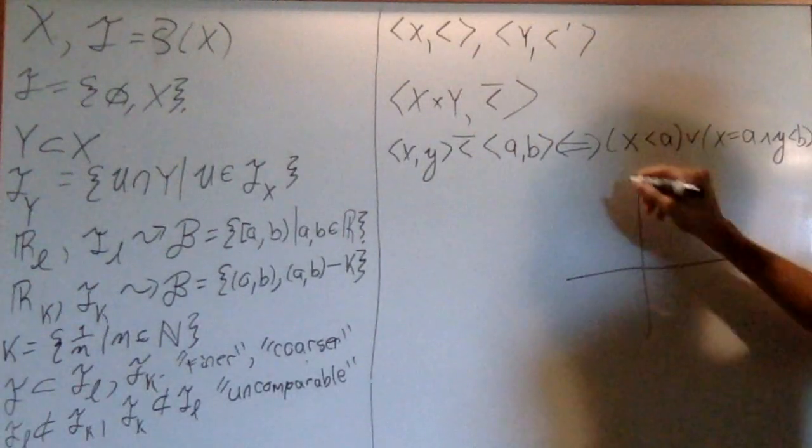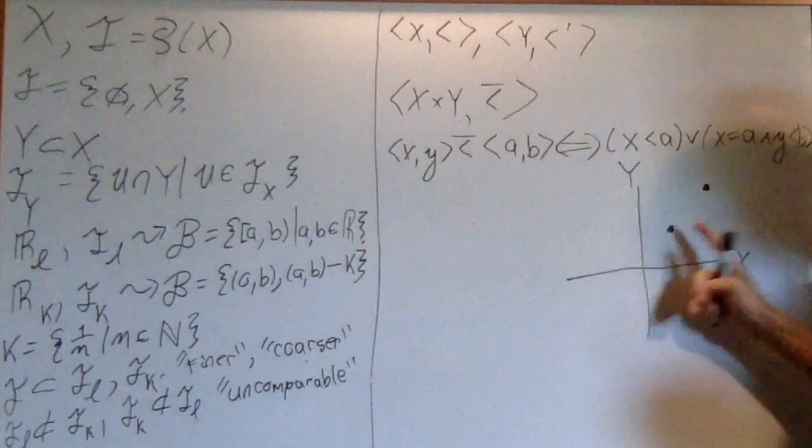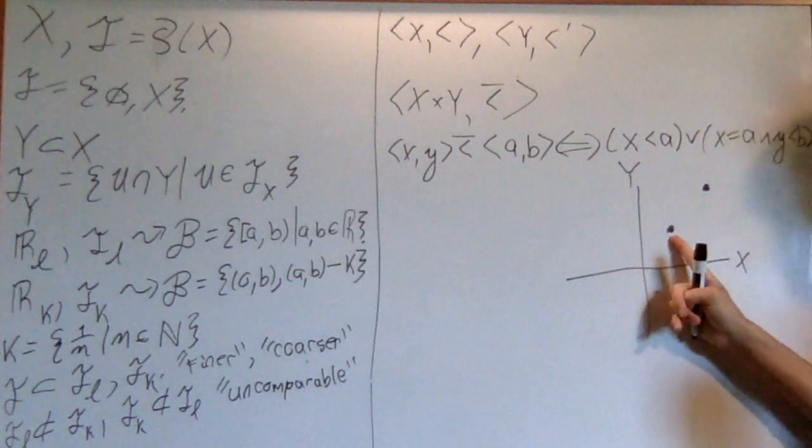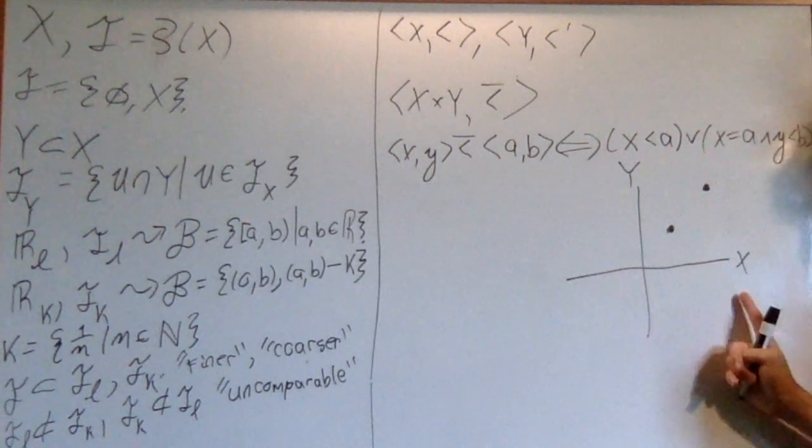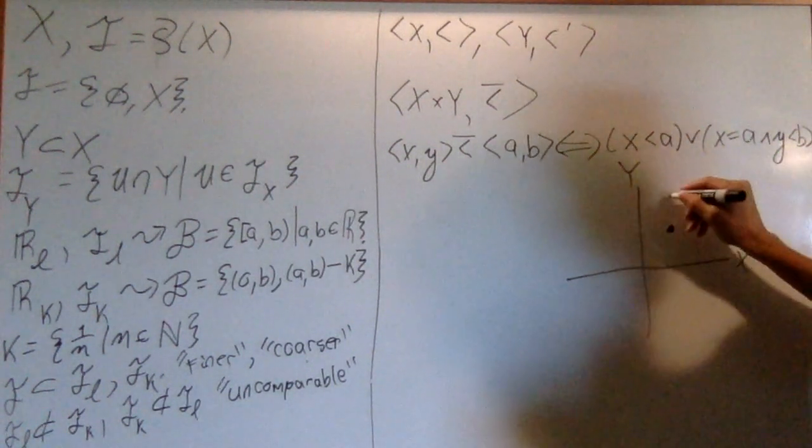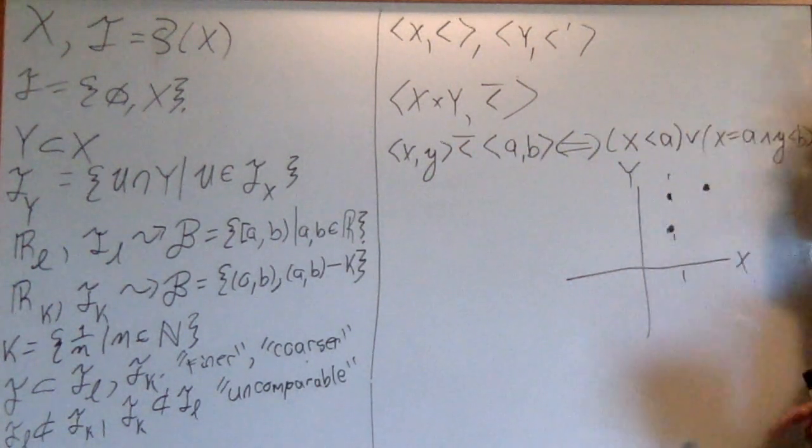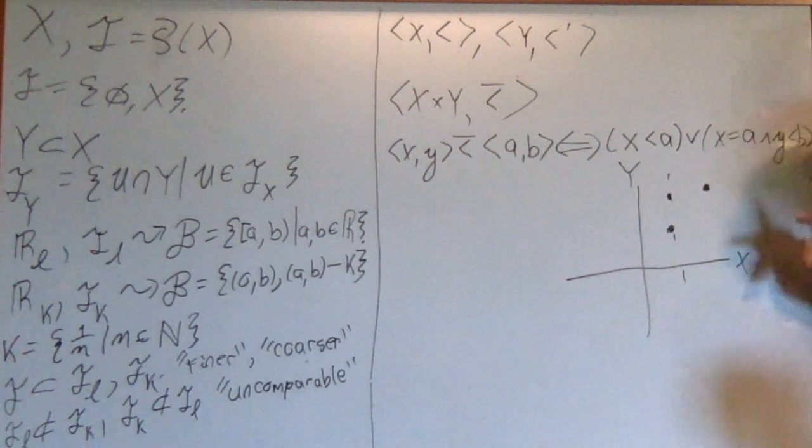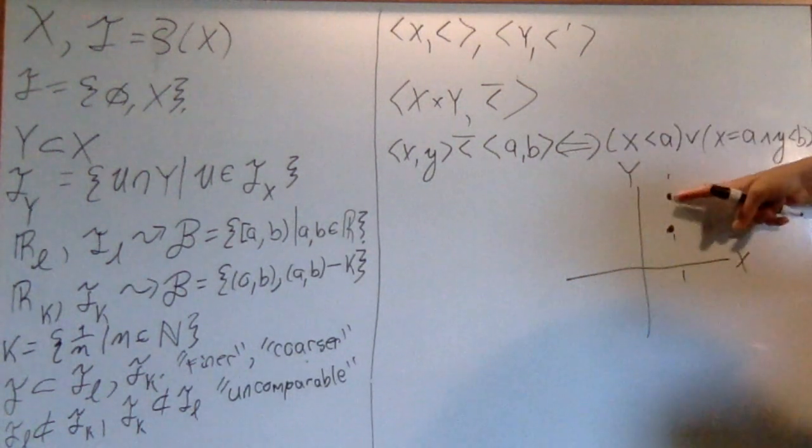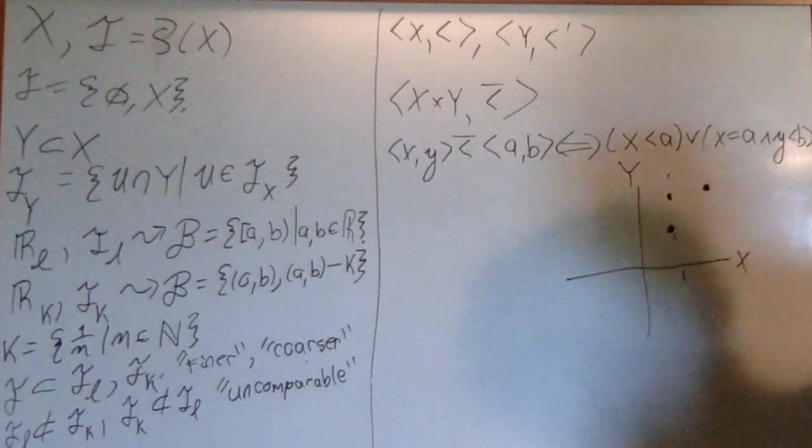Let's take the space X cross Y, and let's just pick two points. This one is less than this one, because this one's x component is less than this one's x component. However, if I had two points who had the same x component, then one is less than the other if their y component is less than the other. This one is less than this one, because this one's y component is less than that one's y component.